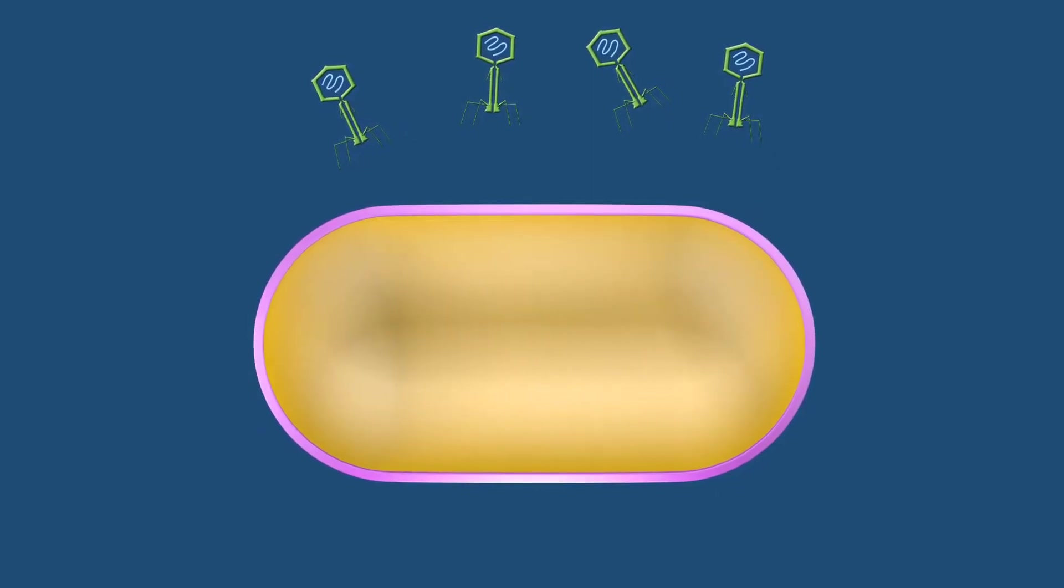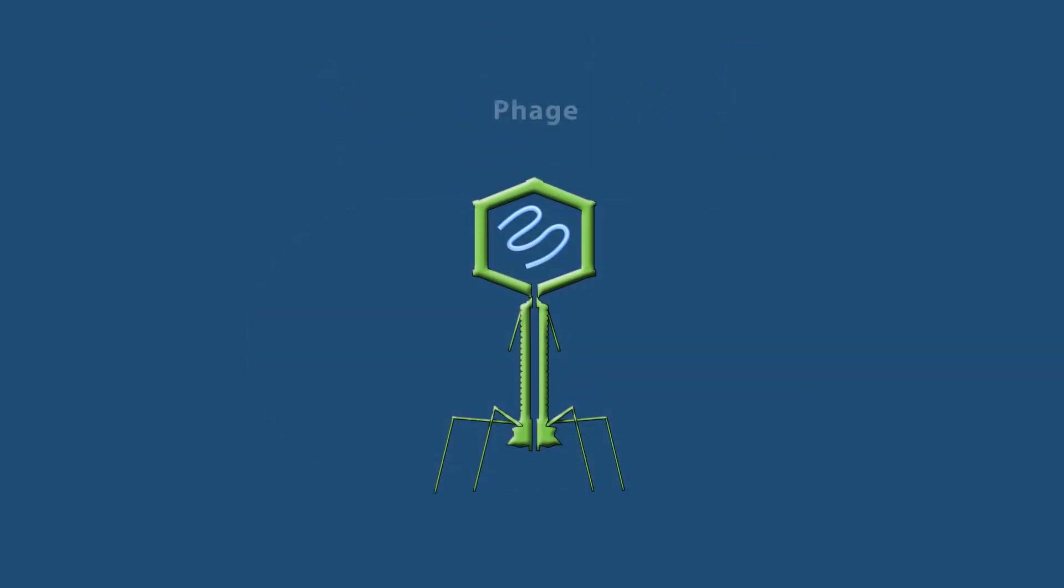In the Hershey Chase experiment, bacterial viruses called phage were used to demonstrate that DNA is the genetic material. The phage used in this experiment consisted of a DNA molecule surrounded by a protein coat.